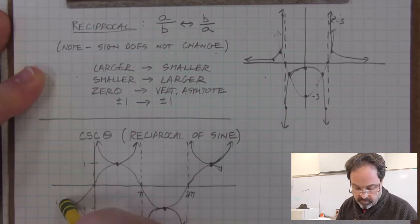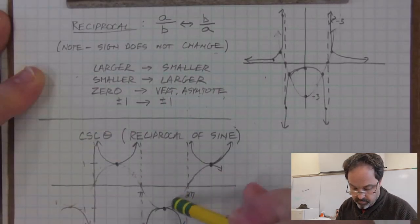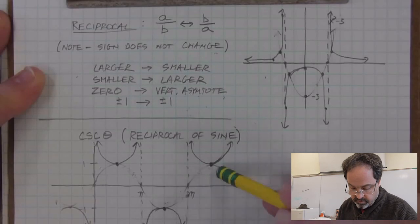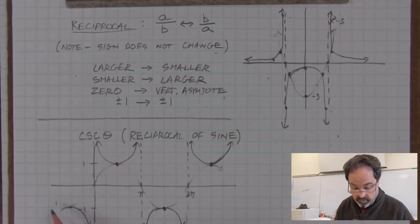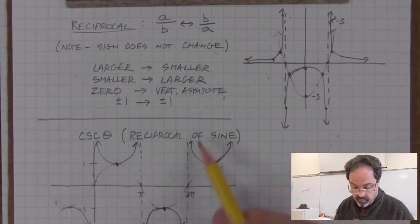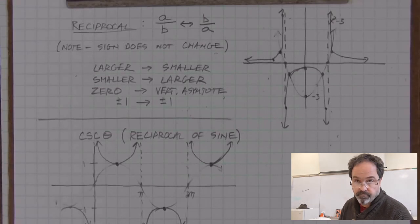And to get a better sense of what the reciprocal of sine or cosecant graph looks like, I will slightly erase sine, and I could observe that the graph of the cosecant function is a bunch of these curves on either side of the horizontal axis.